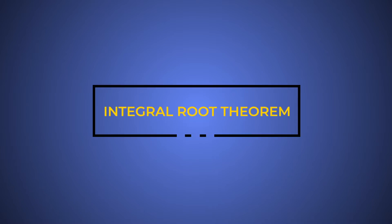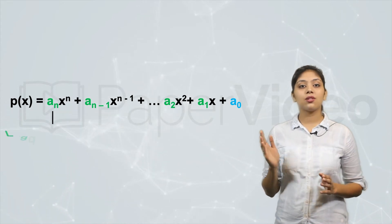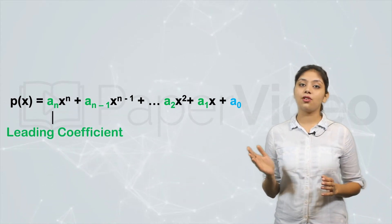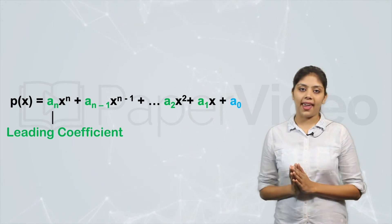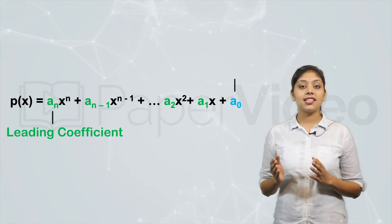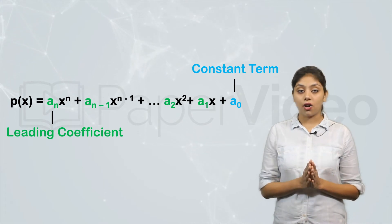The Integral Root Theorem is used to find the roots of a polynomial. To understand this theorem, consider the standard form of a polynomial. Here, an is known as the leading coefficient because it is the coefficient of the highest power of x, and a0 is known as the constant term.